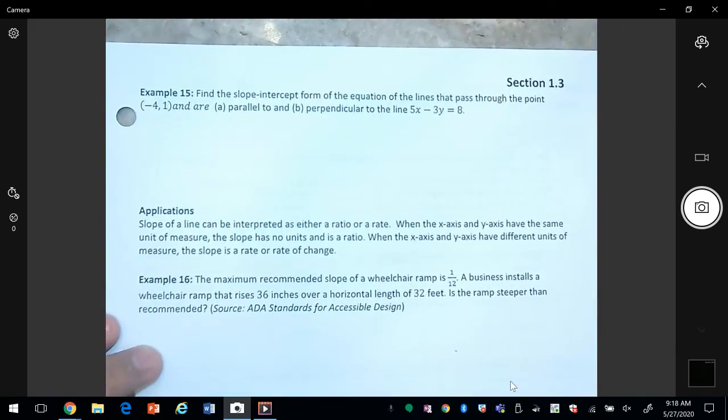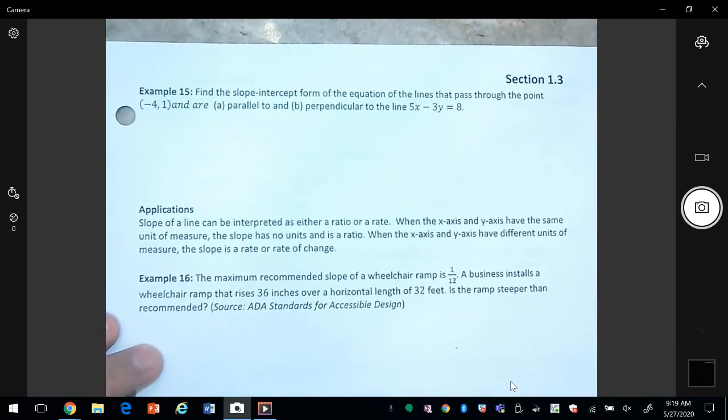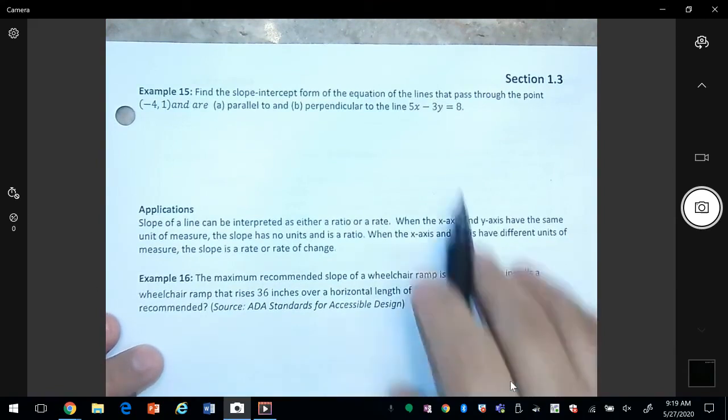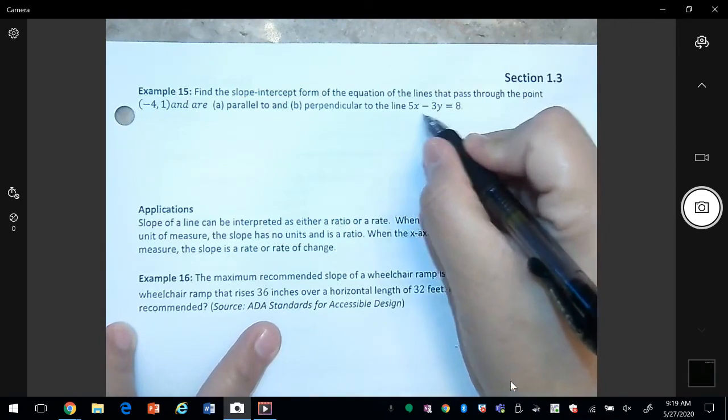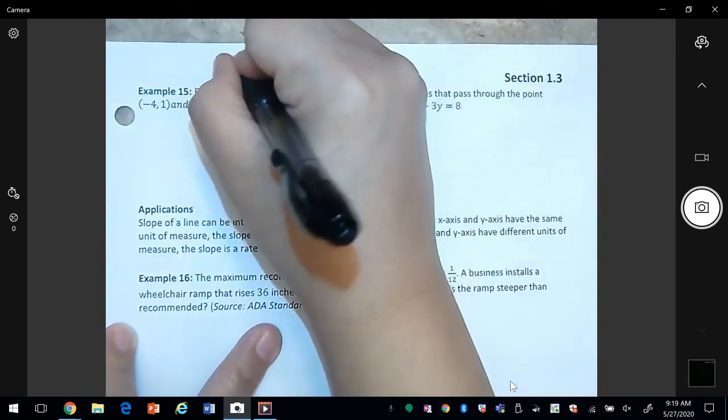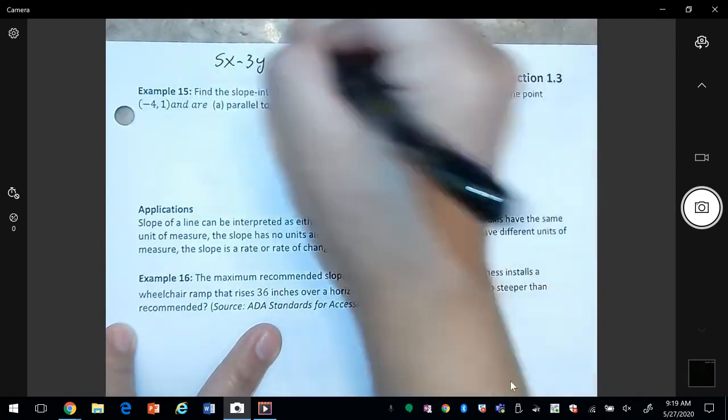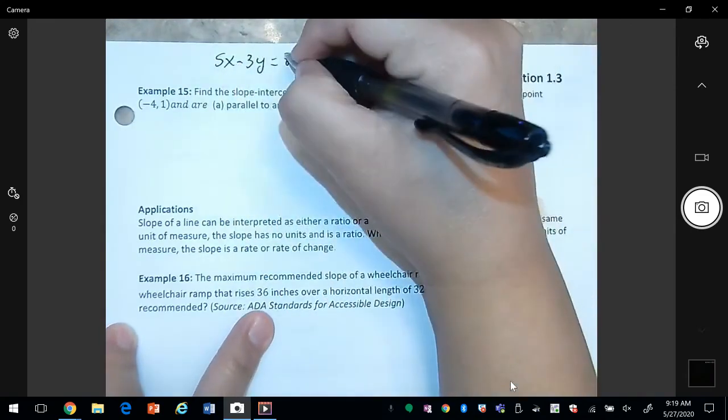Find the slope-intercept form of the line that passes through the point negative four and are parallel and perpendicular to this other line. So the first thing we want to do is figure out what the slope is that we're working with.